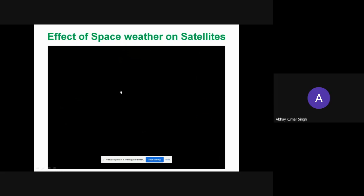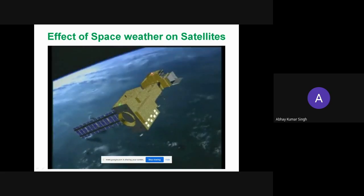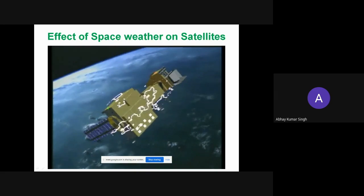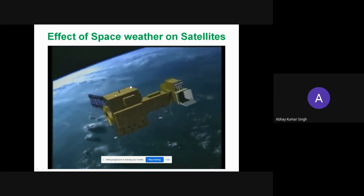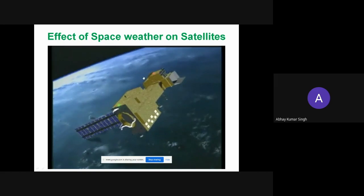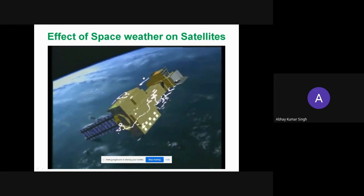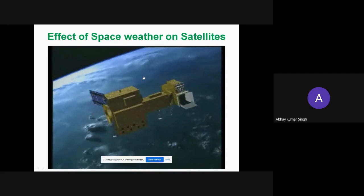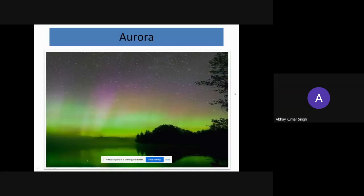Space weather particles also affect satellites — you may have heard of Skylab falling due to space weather particles. A satellite in orbit can have eddy currents produced on its surface by solar wind particles, damaging the body and solar panels. Sometimes the particle flux changes the satellite's path, taking it out of orbit with no control. In rare cases like Skylab, the satellite entered Earth's gravity field and began falling — scientists had to direct it to fall on the Australian desert. Space weather shortens satellite lifetimes and can make them fall to the ground.